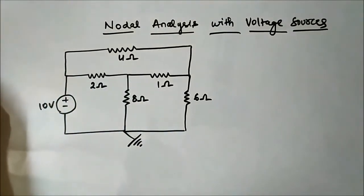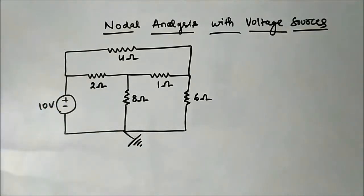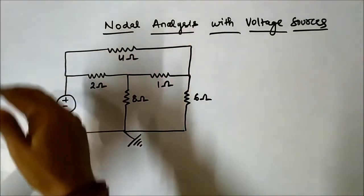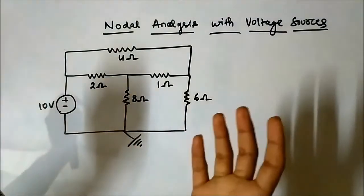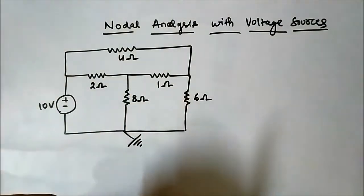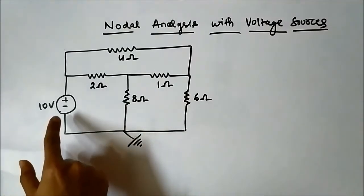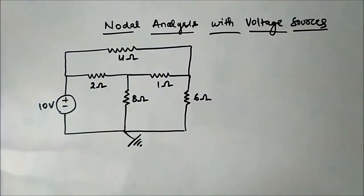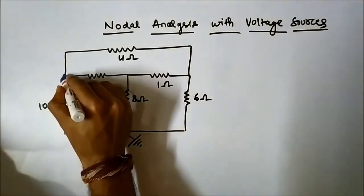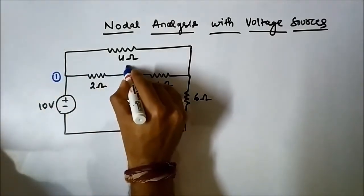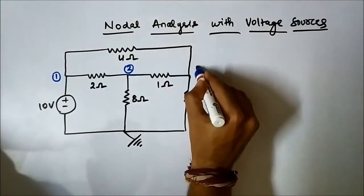Let us discuss nodal analysis with voltage sources. Here we have a circuit. As you can see, it involves some network of resistors and it has an independent voltage source. And there are three nodes — one, two, and three.